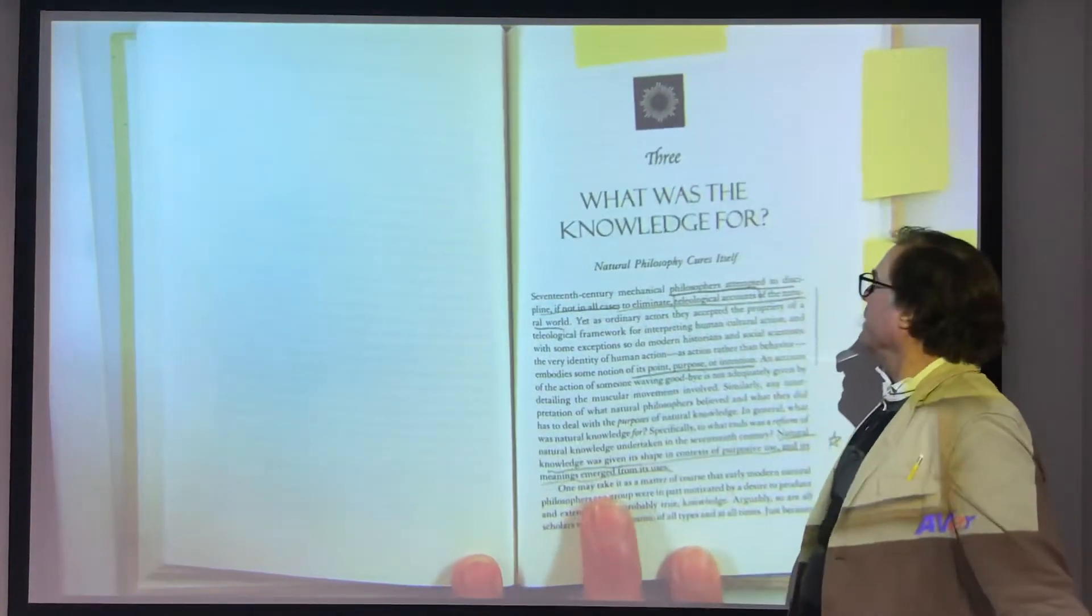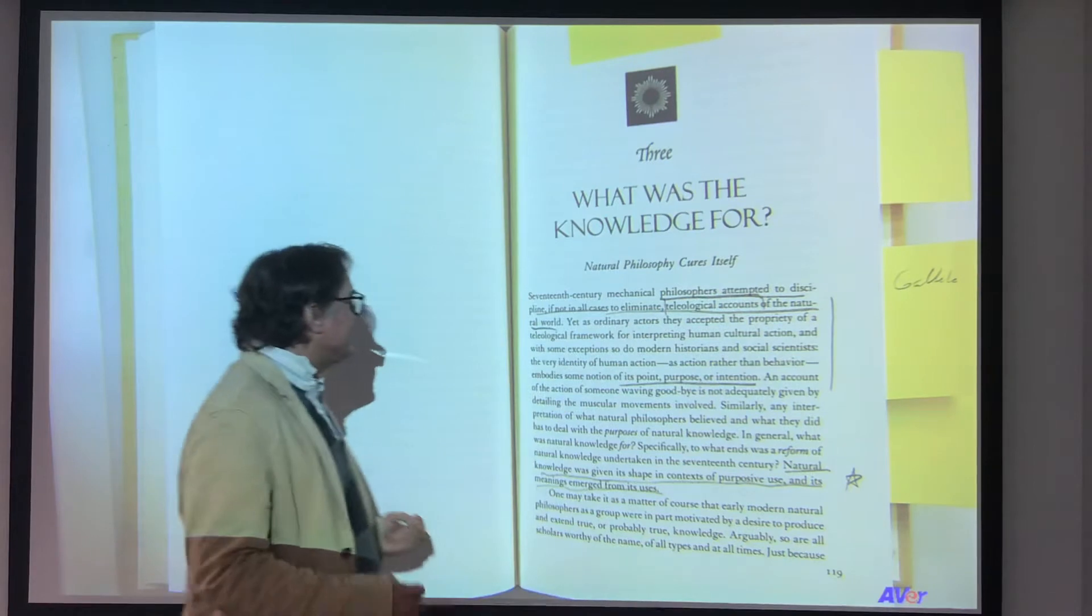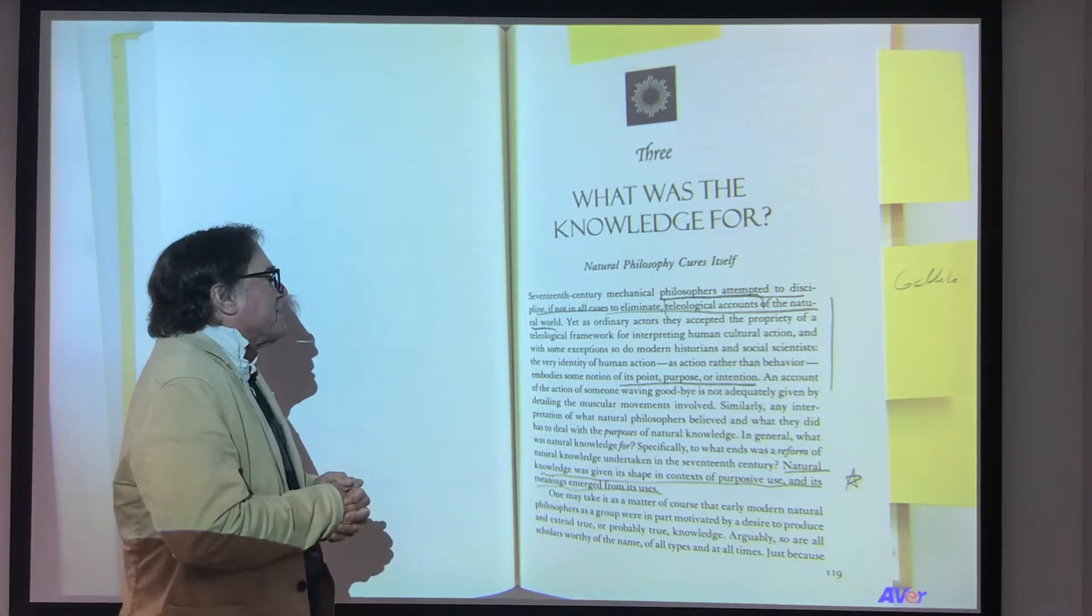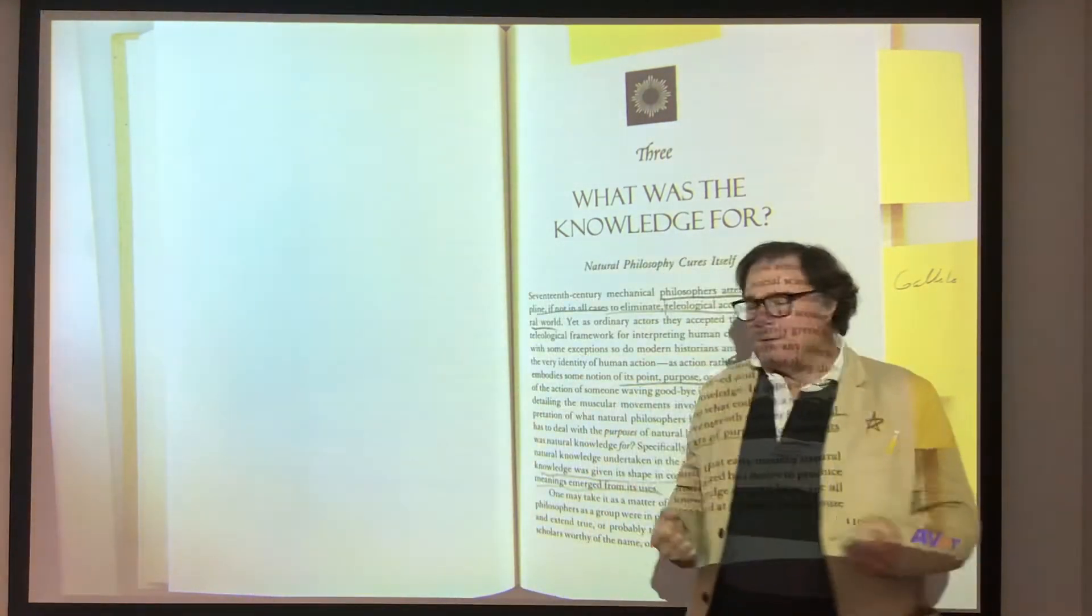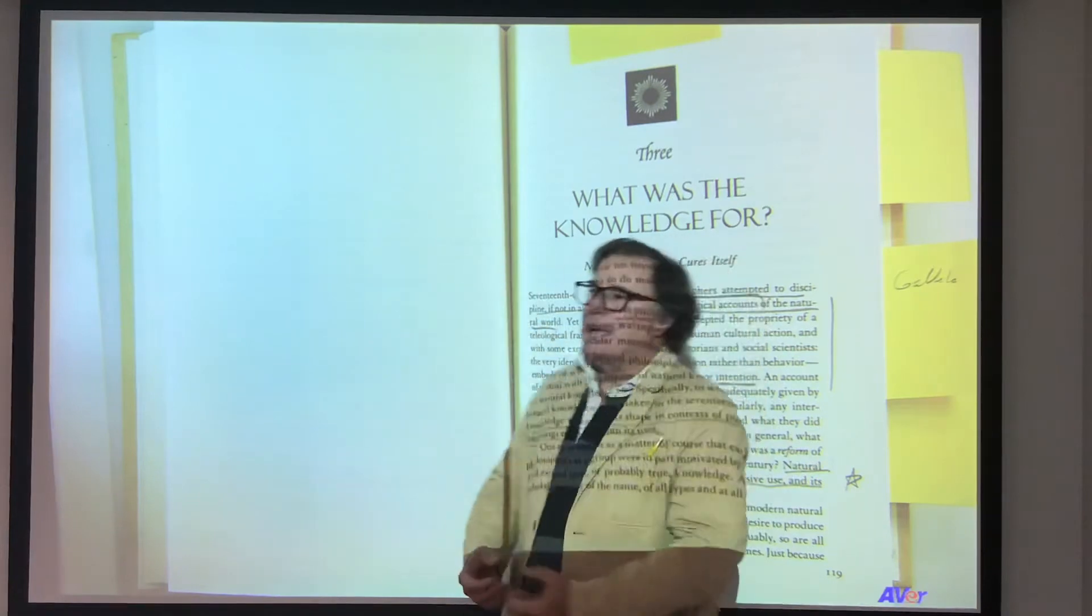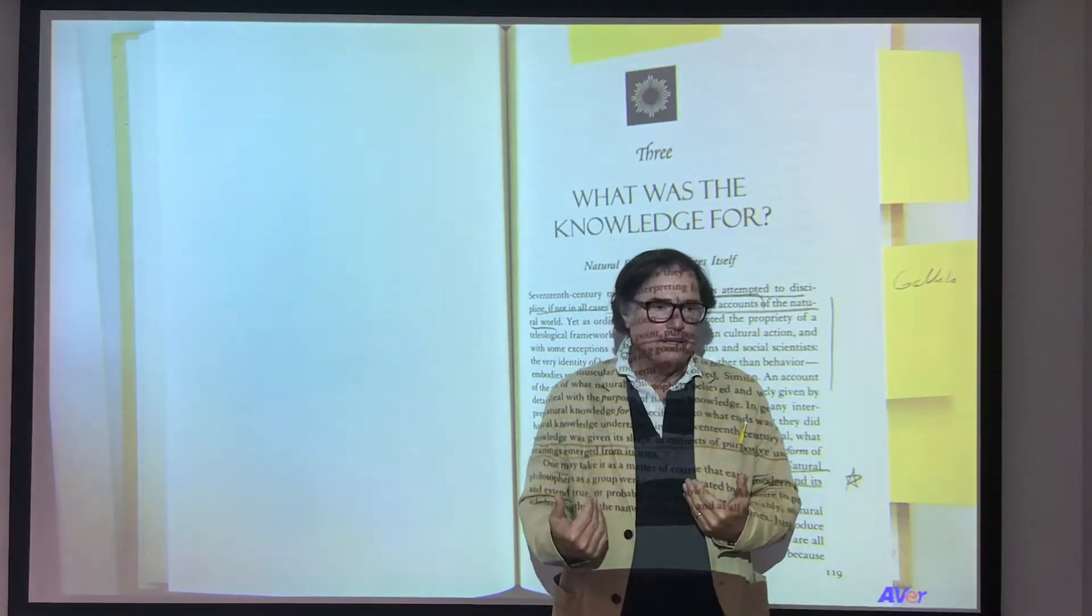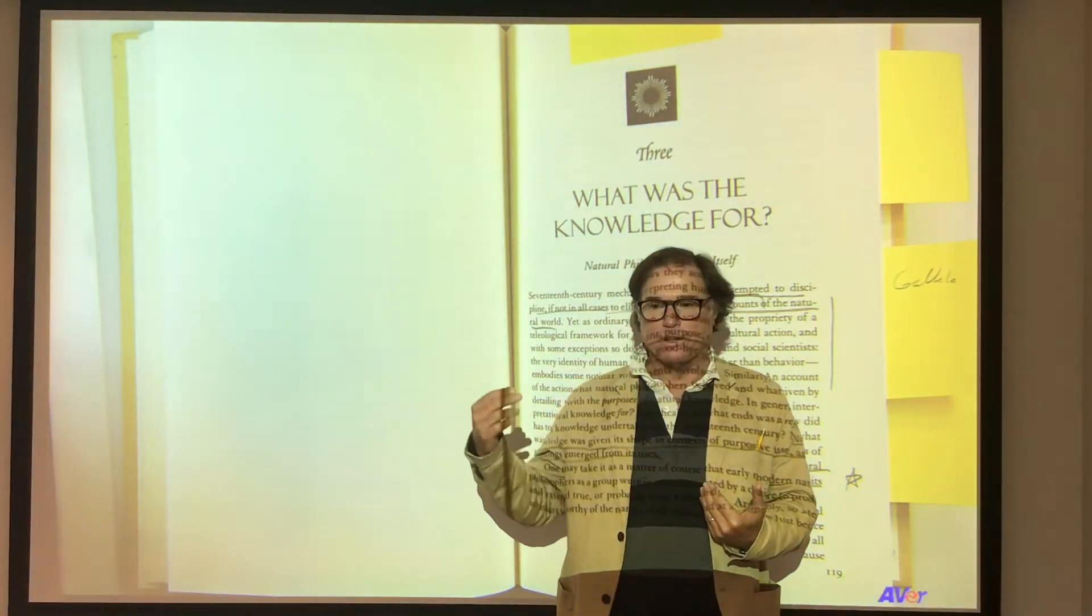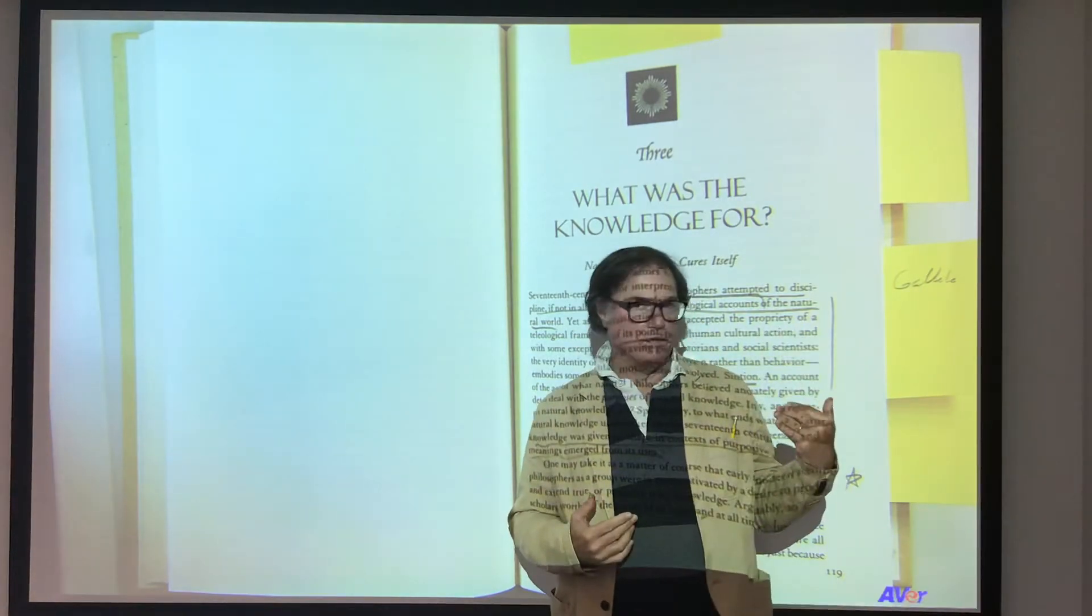This 'What is knowledge for?' section: 17th century mechanical philosophers attempted to discipline, if not eliminate, teleological accounts of the natural world. Yet as ordinary actors they accepted the propriety of a teleological framework. What is all this for? A lot of people are going to use it. Two institutions that he talks about using it are the state and religion. We'll carry this on especially into the founding of the German universities, University of Berlin.